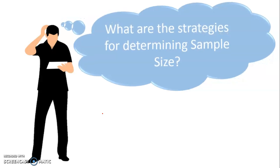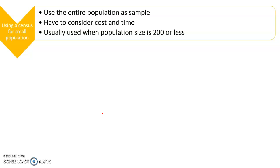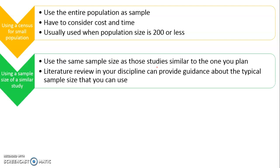There are several strategies for determining sample size. The first is to use the entire population as the sample — that is, a census. For small populations this is considered when you have sufficient money and time, since it is usually expensive and time-consuming. It is generally preferred when the population size is 200 or less.